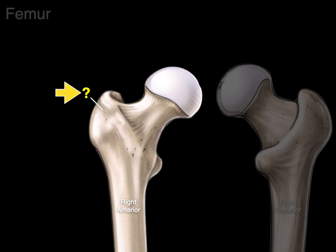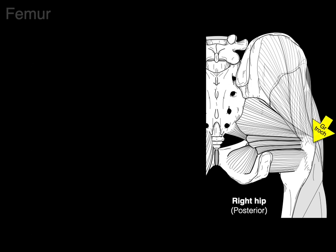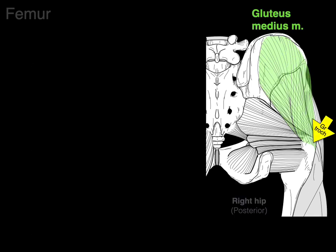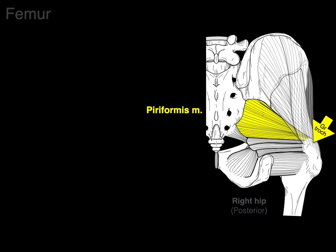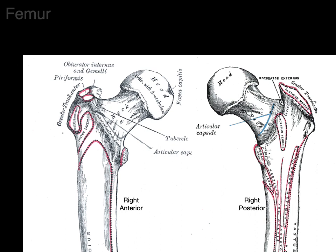Next, we have this big bony prominence on the proximal and posterior part — it's called the greater trochanter. We see it on both the anterior and posterior sides of the femur. It's important for muscle attachments: gluteus medius, gluteus minimus, piriformis, superior and inferior gemellus muscles, obturator internus. From the front, the obturator externus courses behind the neck and attaches to the greater trochanter. As you can see in this picture from Gray's Anatomy, lots of muscles attach to it.